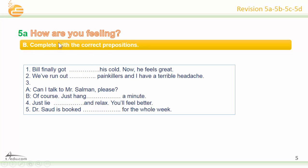Now complete with the correct prepositions. Number one: over. Number two: off. Number three: on. Number four: down. Number five: up.